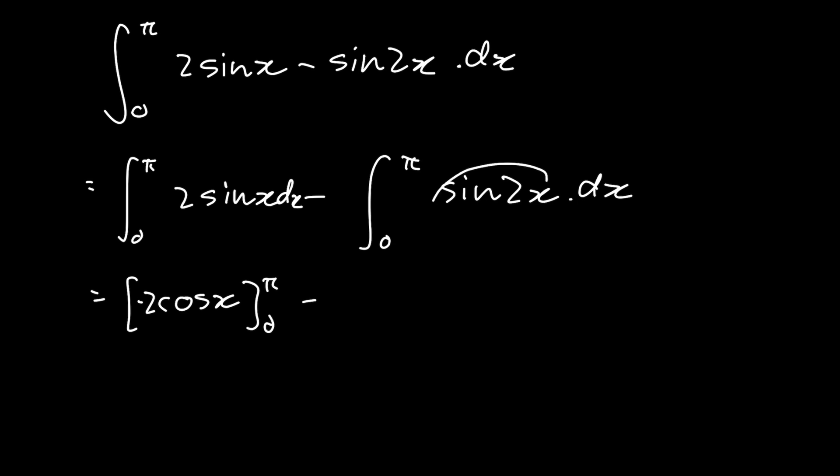Now we'll make a substitution. Let u = 2x. Differentiating in terms of x, we get du = 2dx, and this is our substitution. But since this is a definite integral...